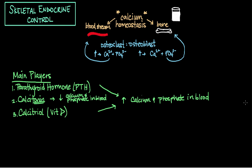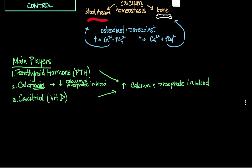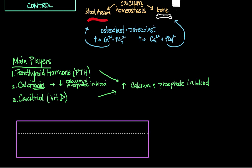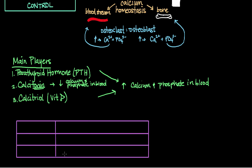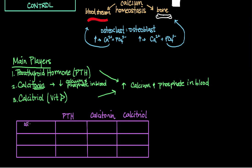It would be helpful to draw out a table showing how each of these hormones affects osteoblast and osteoclast cellular activity, as well as calcium absorption from the intestines and kidneys. Going across the table we have parathyroid hormone, calcitonin, and calcitriol. The rows will cover osteoblast activity, osteoclast activity, and intestinal or renal absorption of calcium.